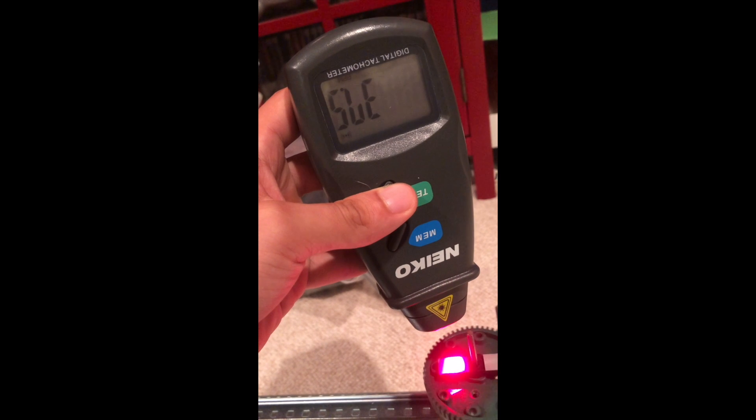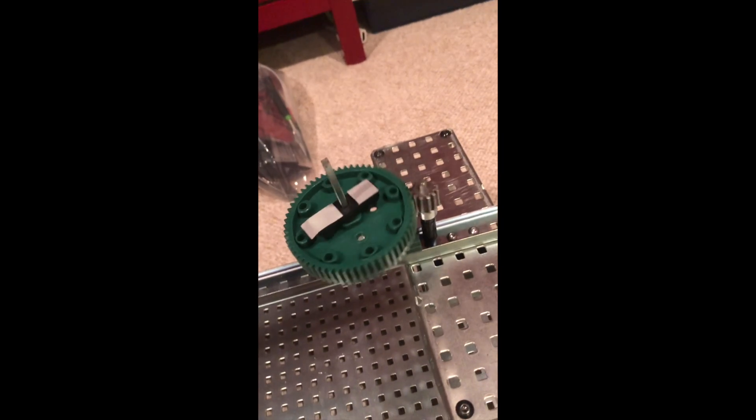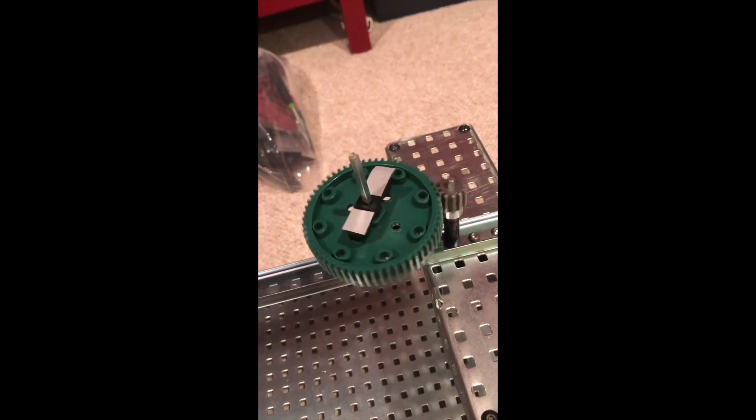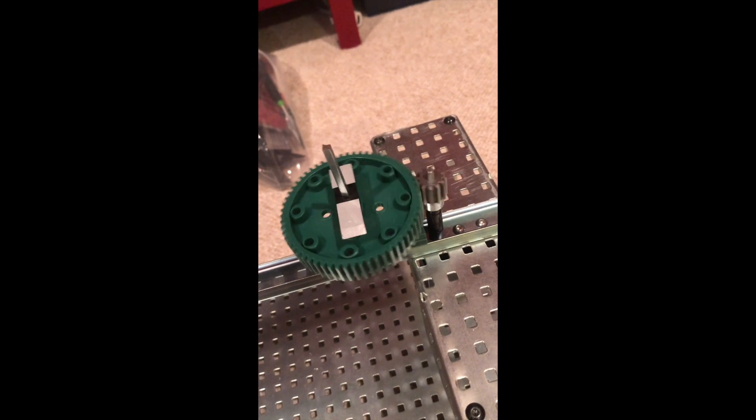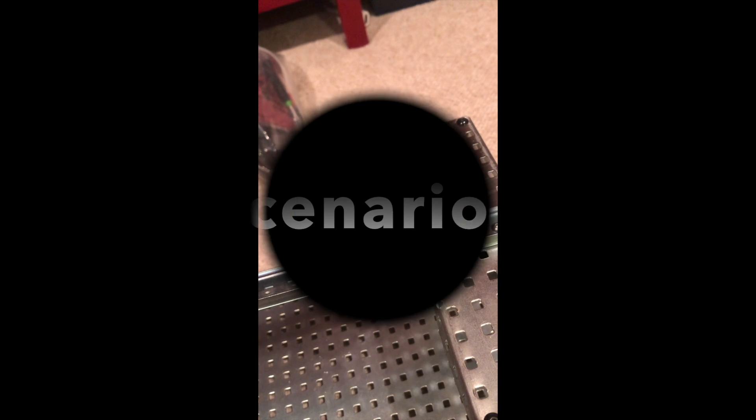Getting around 37.5 RPM. So you've got to divide that by 2 from the reflective tape, and that comes out to around 18.5 RPM.